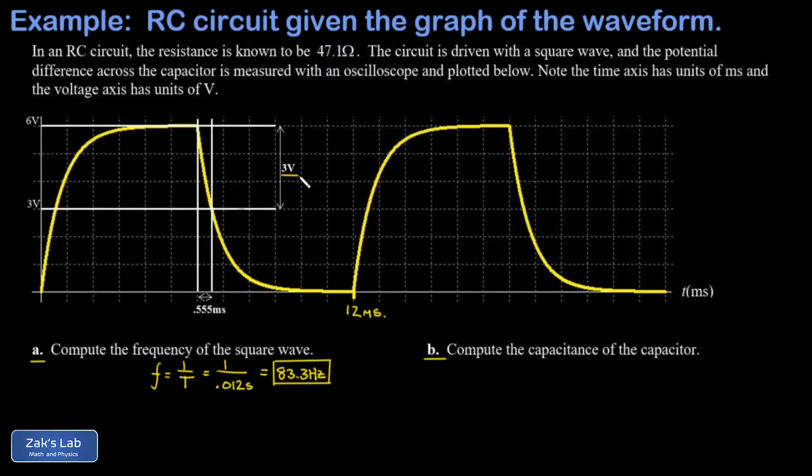And I can see I have these cursors up in the oscilloscope window and this is actually how a lot of digital oscilloscopes work. You can set these cursors where you want them and it will tell you what the time difference is or what the voltage difference is. I noticed the square wave goes from 0 to 6 volts.